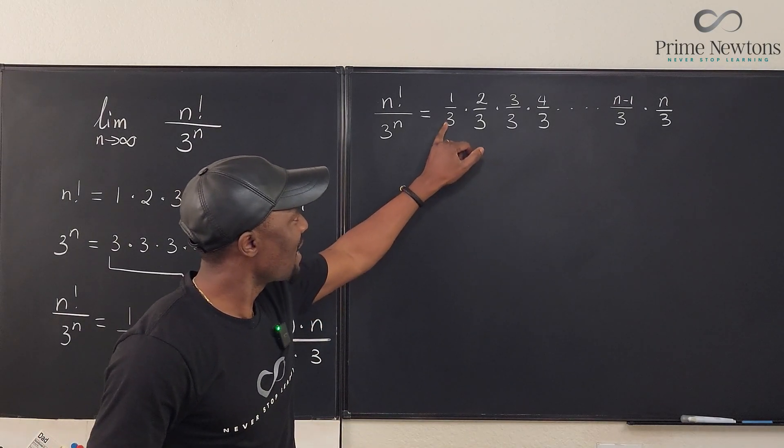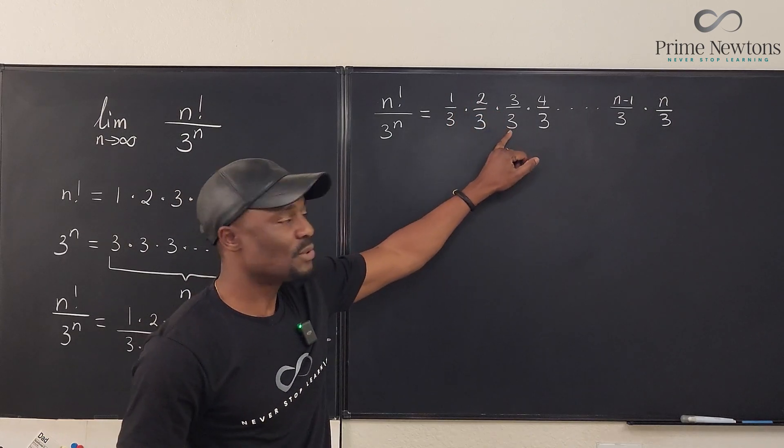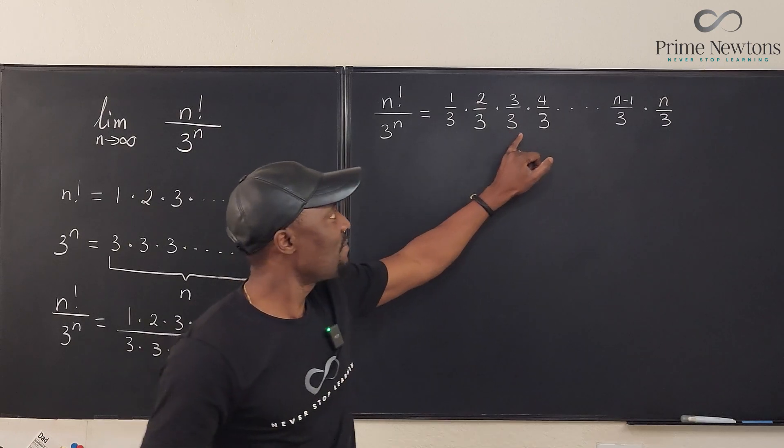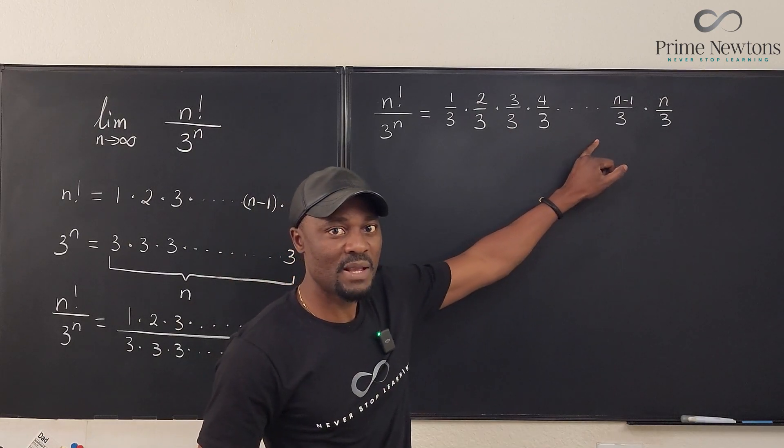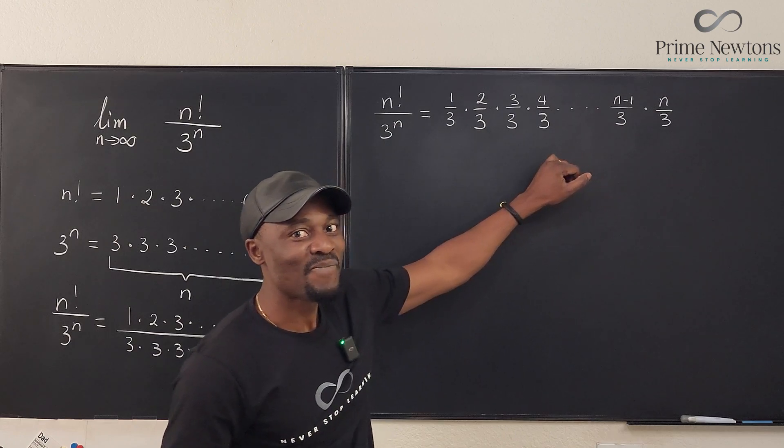But I want you to pay attention to something. This is the same thing as 1 third times 2 thirds times 1. After 1, every single number here is bigger than 1.